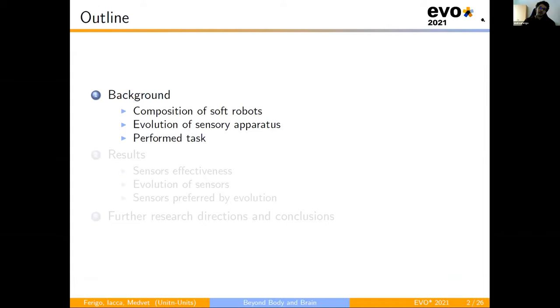Here is the outline of our presentation. We start with the background, so we speak about the composition of the robot, the evolution of sensor apparatus, and the performance sensor.